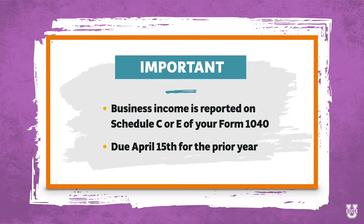A few important notes about income tax for your business. Business income is reported on Schedule C or Schedule E of your Form 1040, depending on the type of entity it's coming from. That form is due April 15th for the prior year, unless the deadline has been extended by the IRS — which they occasionally do under extreme circumstances, as they did during the COVID-19 pandemic. There's also the ability to apply for a six-month extension — it's a short and easy form, but you have to file it by April 15th. One really important caveat: extending the deadline for your tax return does not extend your time to pay. If you owe money, it is still due by April 15th.